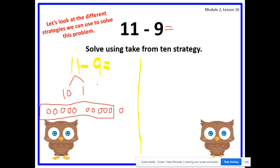Now we identify how many we're taking away and we cross them off. How many are we taking away? Yes, 9. So let's cross off 9. Now we just add our leftover parts. How many left inside the box? 1. How many left outside? 1. 1 plus 1 equals? Yes, 2. Awesome job. So 11 minus 9 equals 2. This is one way to solve it.